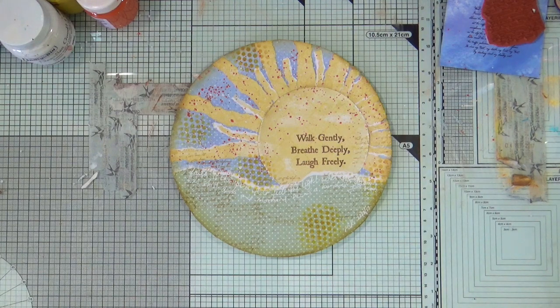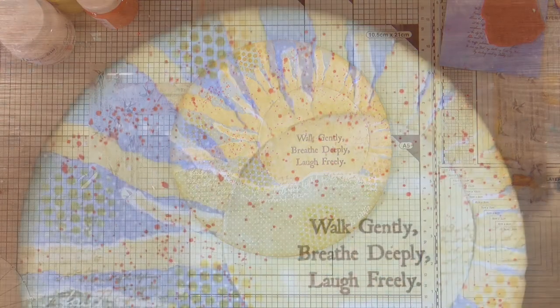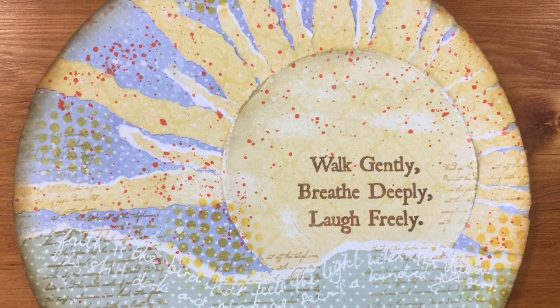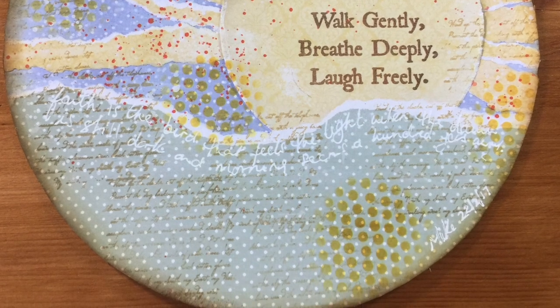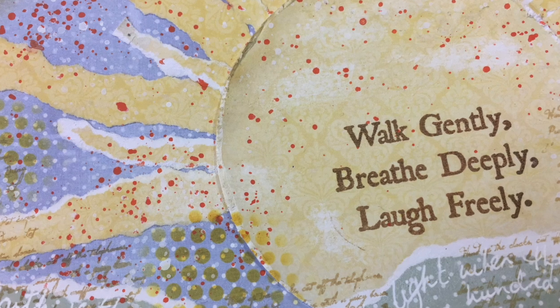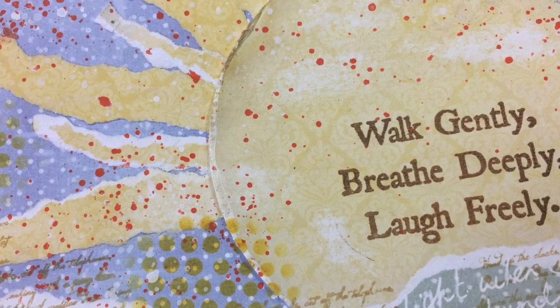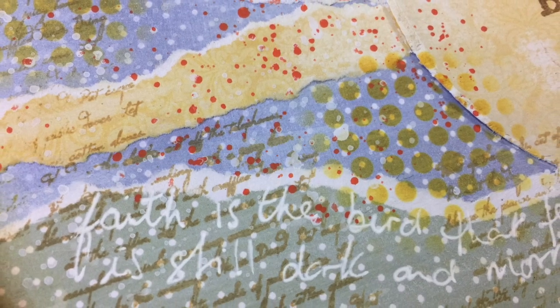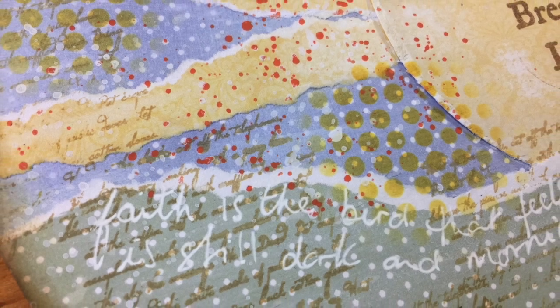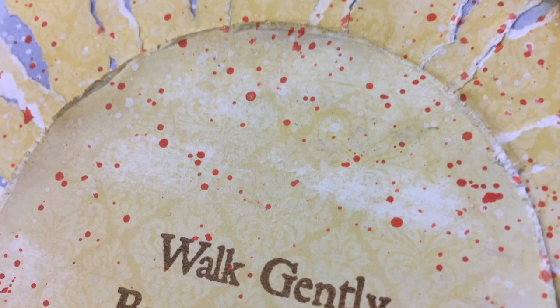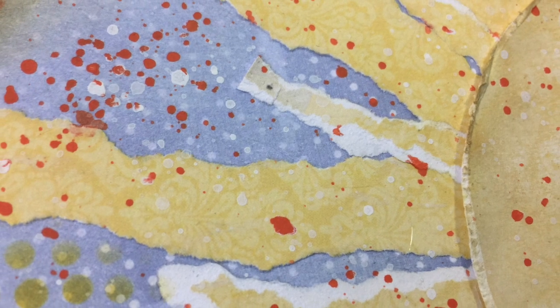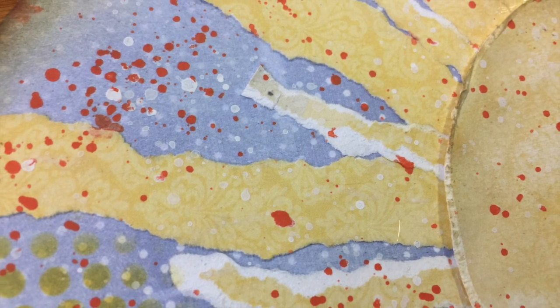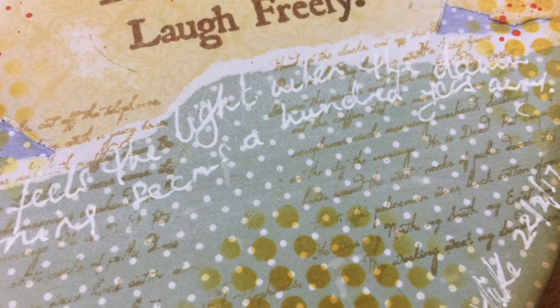So that's week number seven for Journal 52 and the prompt was dawn. I hope you've enjoyed watching this art journal page be created. It's surprising what you can do if you want to use up some of your scraps of paper that you've had lying around for a while. If you have enjoyed watching the video, please remember to give it a thumbs up, share the video with all your friends, and if you haven't subscribed to my YouTube channel already, you can do so by clicking the button at the end of this video.